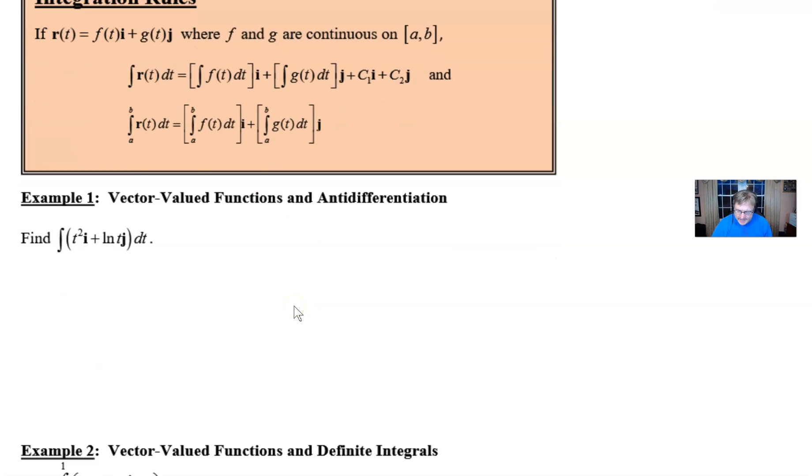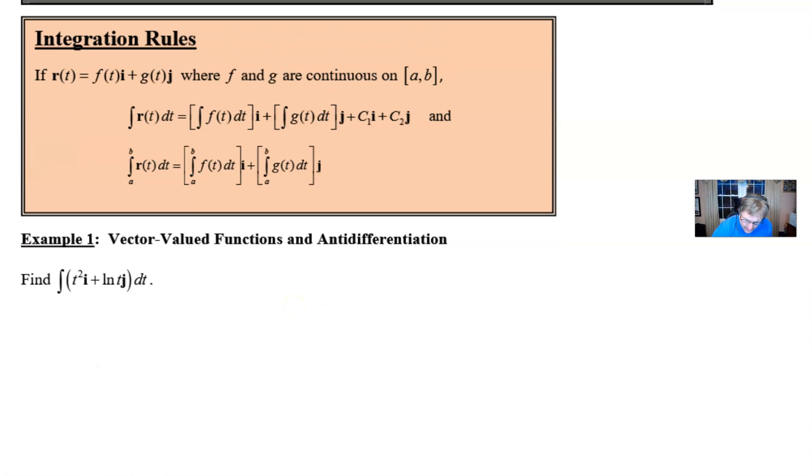So if we take a look at our first example here, number one, we find that our approach is going to be fairly intuitive. We're going to integrate t² times i with respect to t separate from the integration of the natural log of t times j with respect to t.